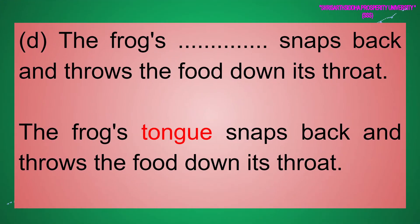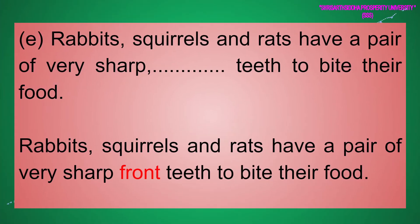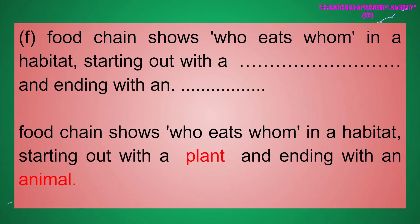(d) The frog's tongue snaps back and throws the food down its throat. (e) Rabbits, squirrels, and rats have a pair of very sharp front teeth to bite their food. (f) A food chain shows who eats whom in a habitat, starting out with a plant and ending with an animal.